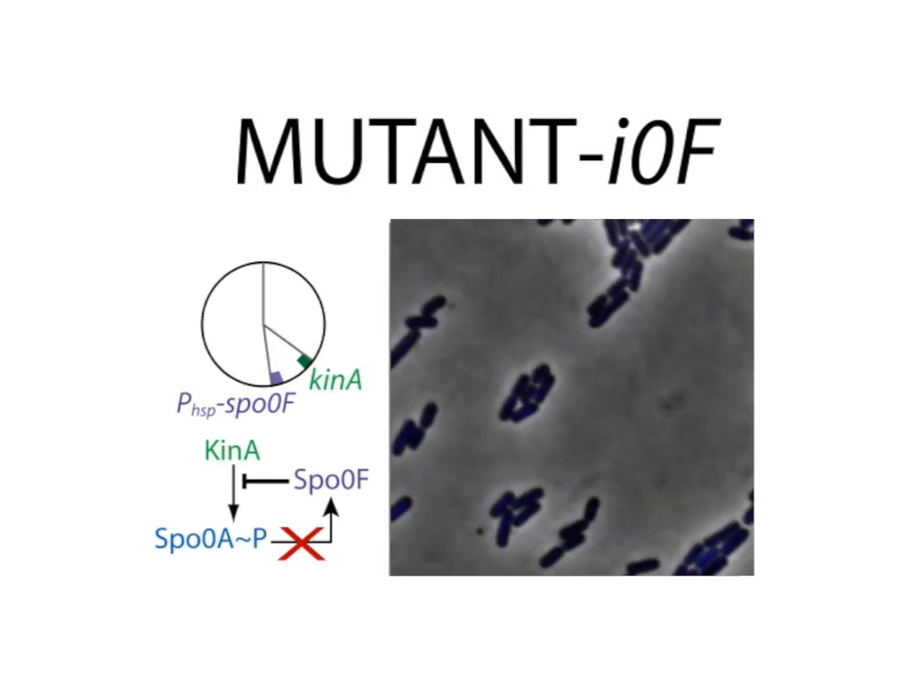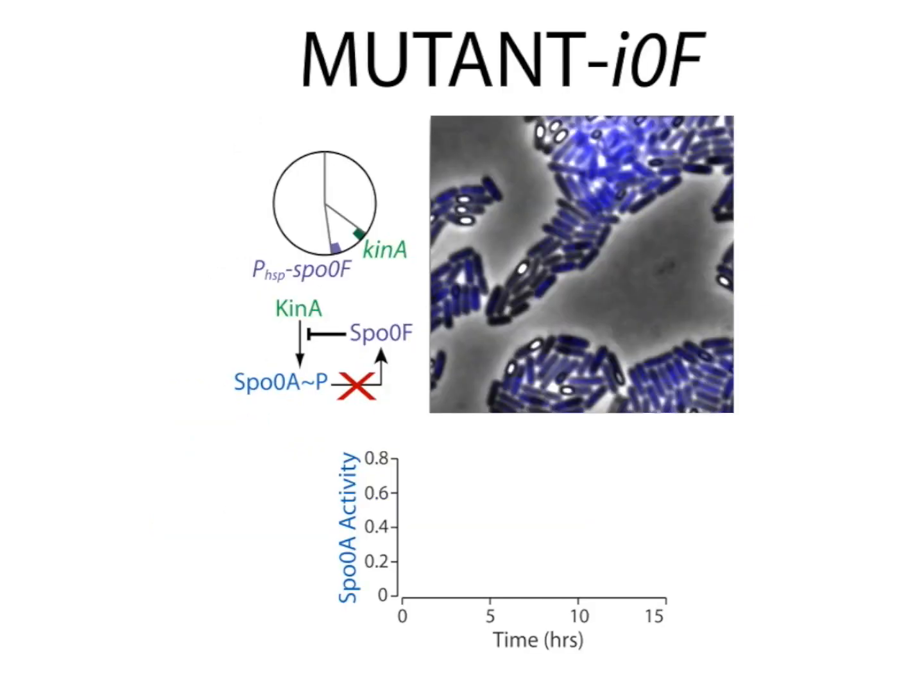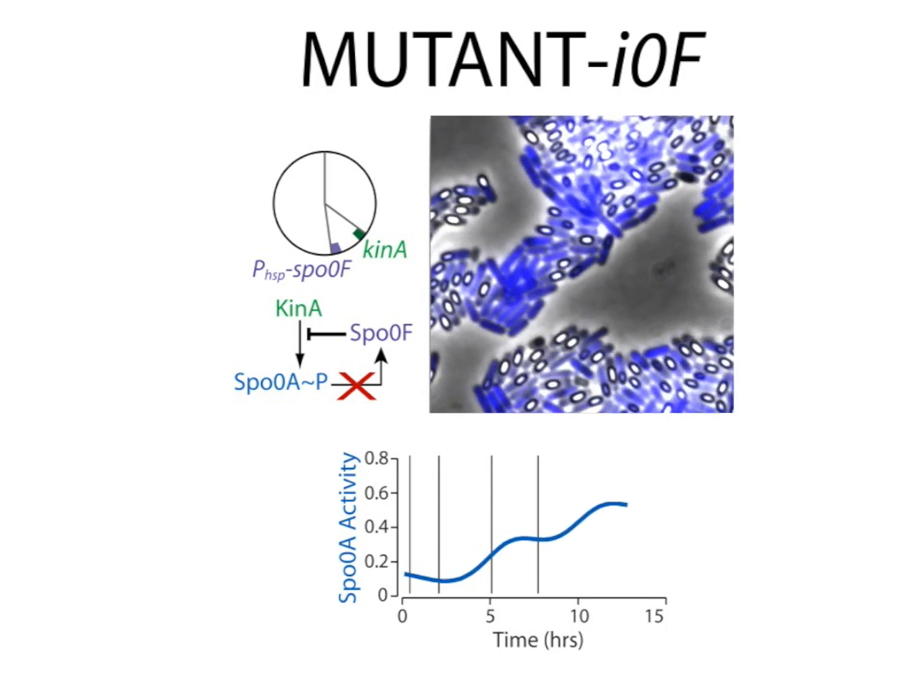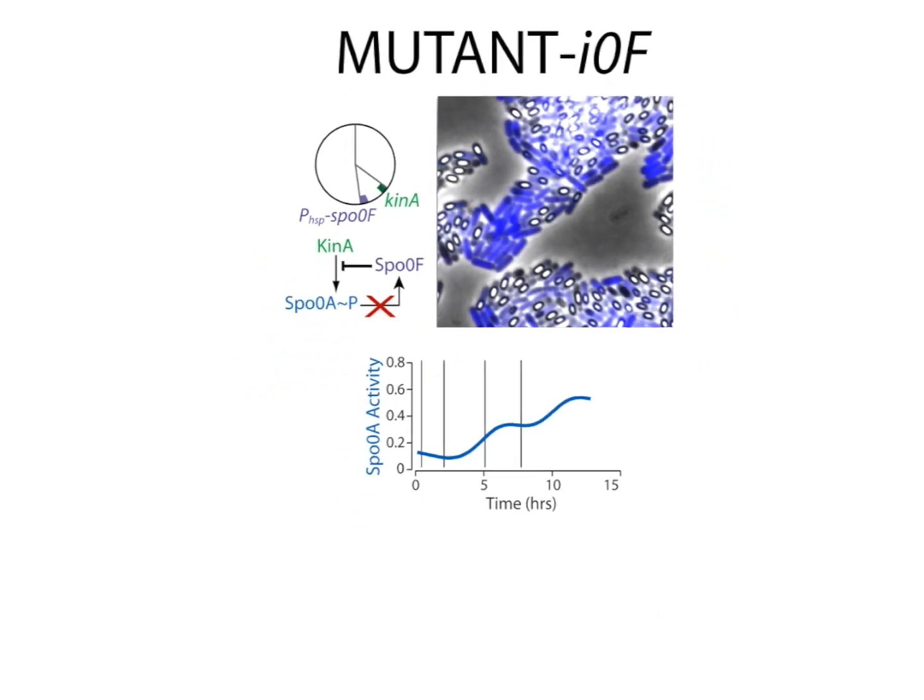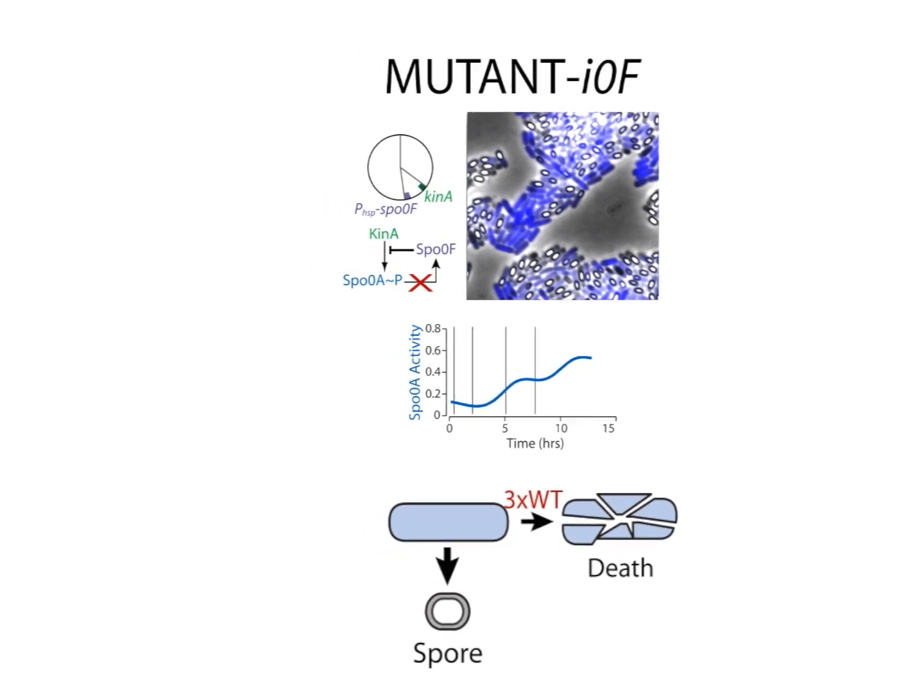We also were able to experimentally break the negative feedback loop between Spo0F and Spo0A by expressing Spo0F from an inducible promoter. As predicted, this resulted in gradual activation of Spo0A over time with no pulsing. Even though the cells managed to produce spores, they showed three-fold higher levels of sporulation defects.